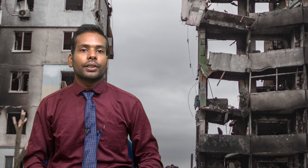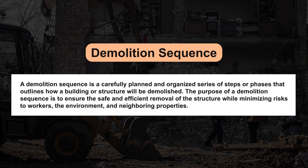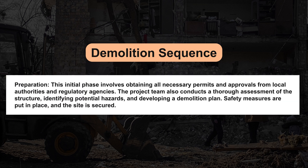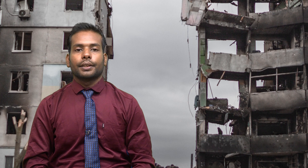Let us discuss the demolition sequence. A demolition sequence is a carefully planned and organized series of steps or phases that outline how a building or structure will be demolished. The purpose is to ensure safe and effective removal of the structure while minimizing risk to workers, the environment, and neighboring properties. The typical first step is preparation: obtaining all necessary permits and approvals from local authorities and regulatory agencies, conducting a thorough assessment of the structure, identifying potential hazards, and developing a demolition plan with safety measures in place.